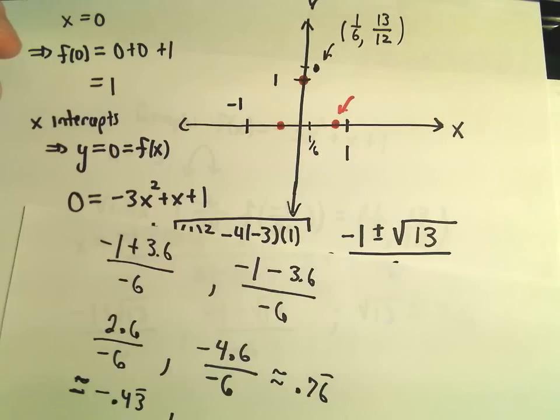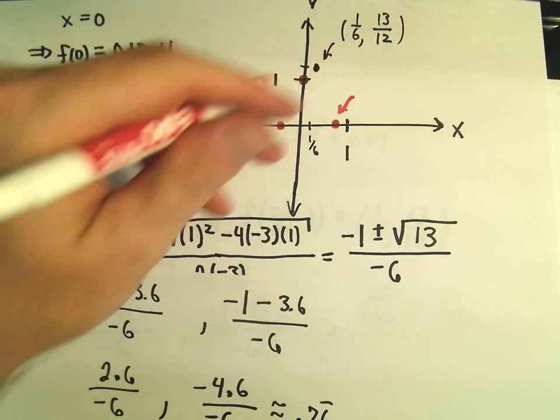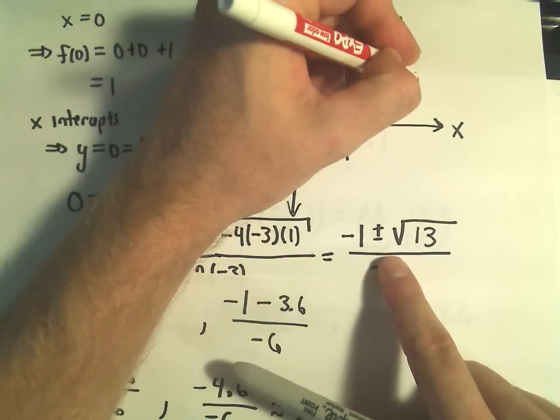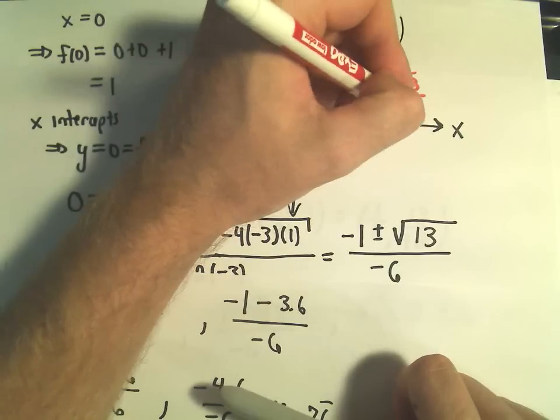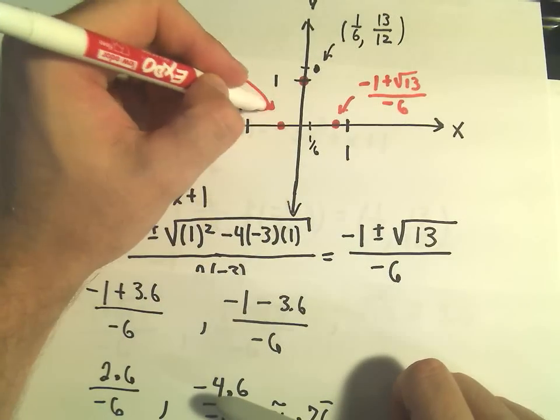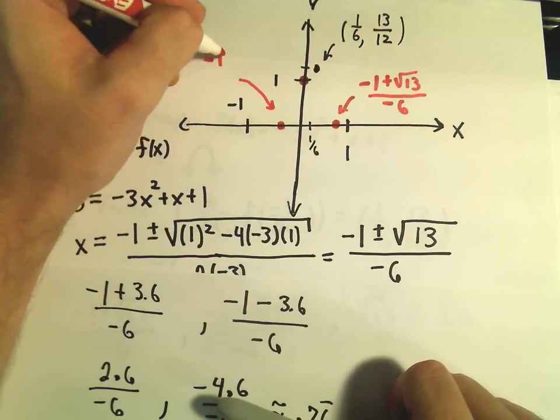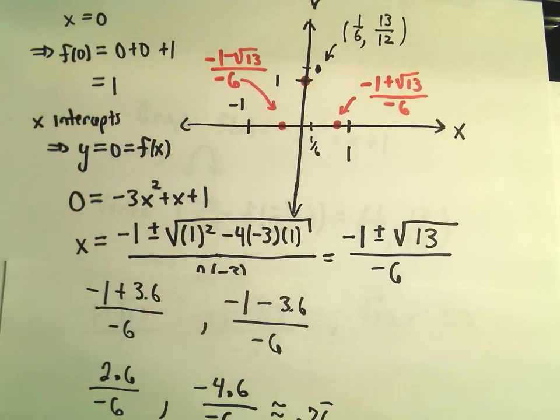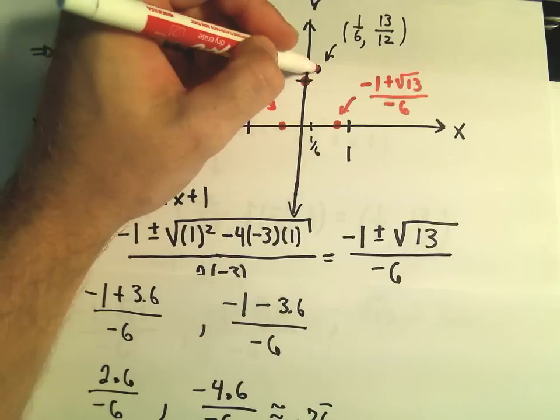So now I'm going to label them though exactly. That would be the point. Let's see. That was the positive one. So that would be negative 1 plus the square root of 13 over negative 6. And then this other point, just so we know it exactly, that would be negative 1 minus the square root of 13 all over negative 6.